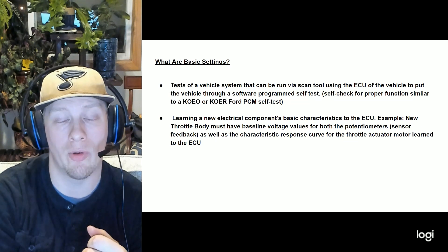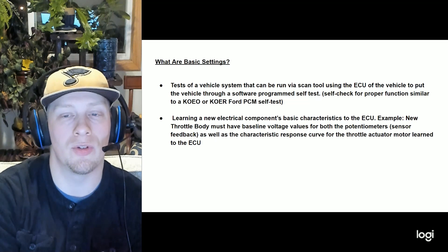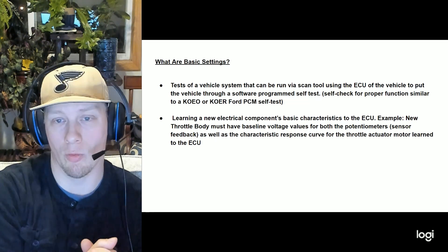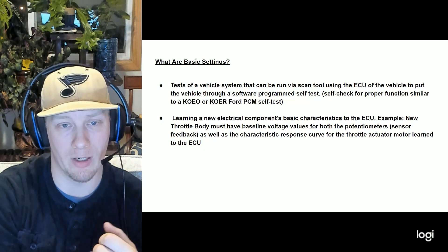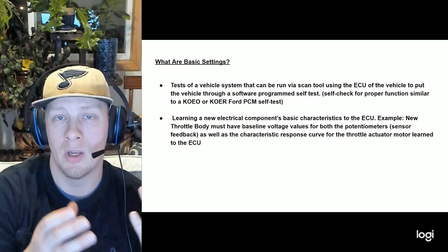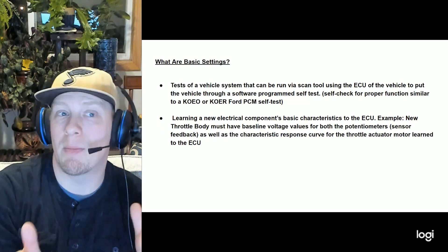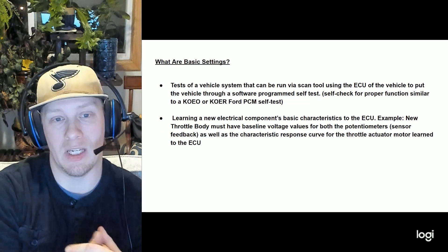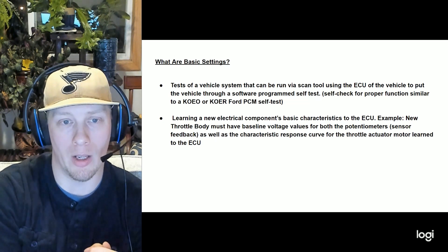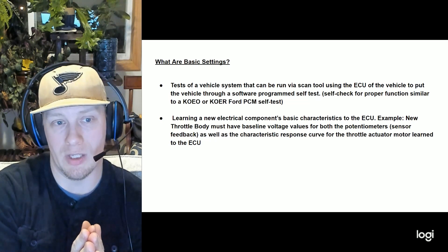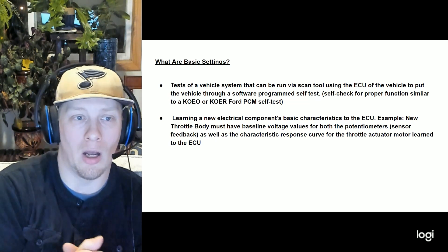The throttle body is a really common example everyone becomes familiar with after working on Volkswagens a few times. Essentially, you're communicating to the control unit what the stopping points are of the voltage values that feed back to the ECU — from the potentiometers inside the throttle actuator assembly. The ECU learns what the stopping point is when the throttle is all the way open and all the way closed.